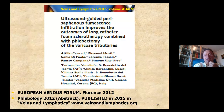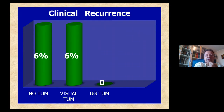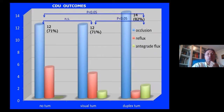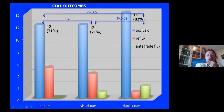To assess whether tumescence helps in foam sclerotherapy, we performed a study comparing three groups: one without tumescence, one with tumescence under visual guidance, and one with tumescence under ultrasound guidance. From a clinical point of view, the ultrasound-guided group had better outcomes. This was even more true with duplex results — the occlusion rate was better for the duplex-guided tumescence group. Some patent veins also showed anterograde flow, which was an interesting outcome.